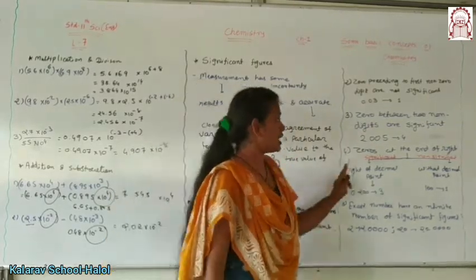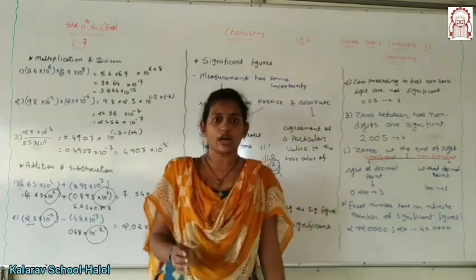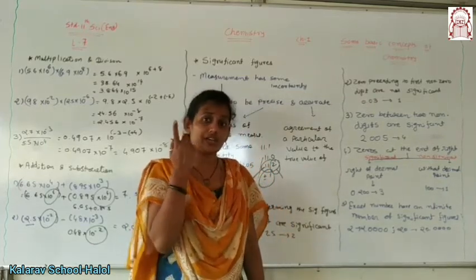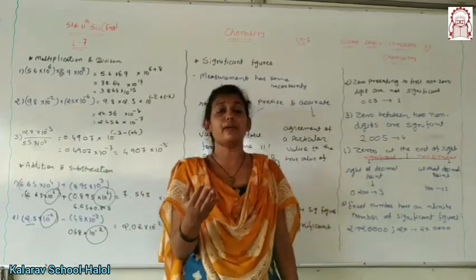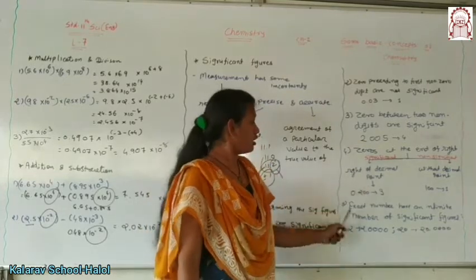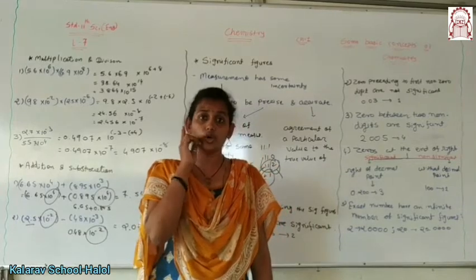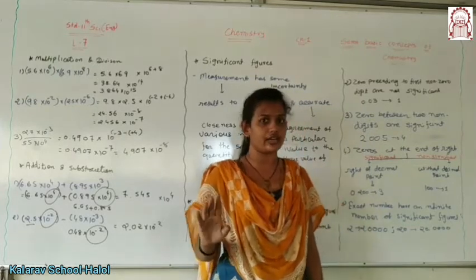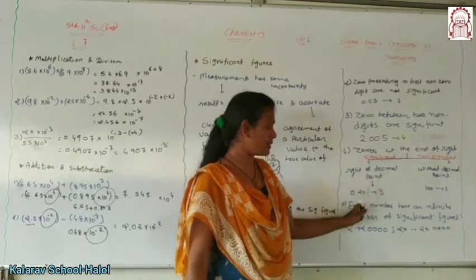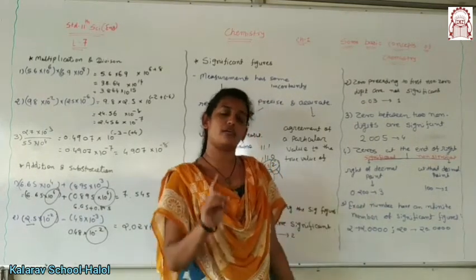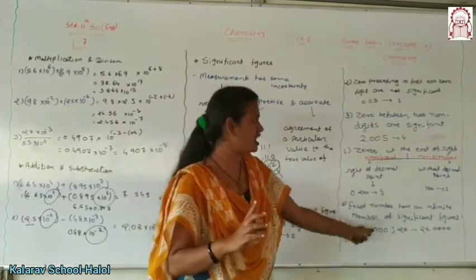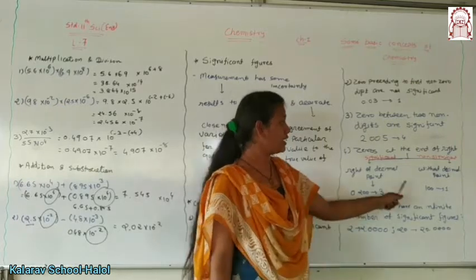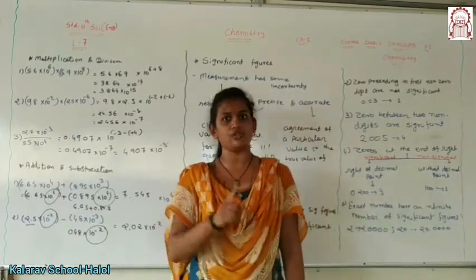If there is no decimal point, the trailing zeros are not counted as significant figures. But if there is a decimal point, you count the trailing zeros as significant. For example, 100 without a decimal point has only 1 significant figure, because the two trailing zeros are not significant.